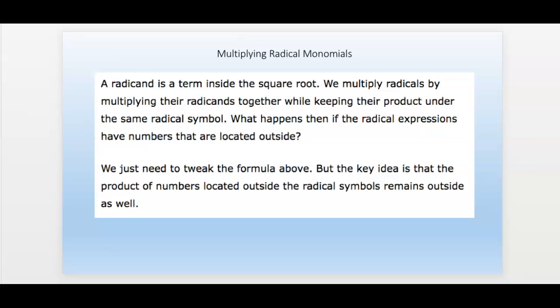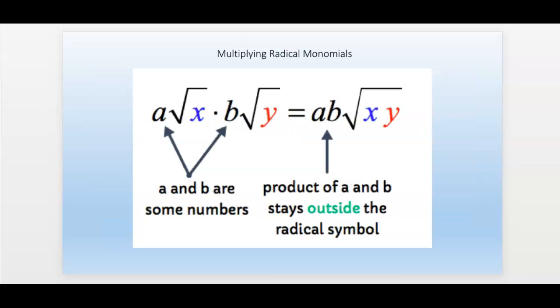The radicand is the term inside the square root. We can multiply them together. But sometimes there are numbers outside of the radical. So we change the formula a little bit. The idea is the product of the numbers outside the radical stay outside, and the ones that are inside the radical stay inside.